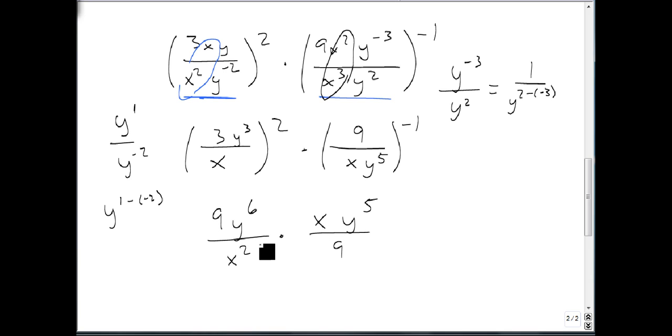We now look across. We have a nine on top and a nine on bottom, so those divide out. We have an x on top and an x squared on bottom, leaving just an x. And y to the sixth times y to the fifth is y to the eleventh. So our answer is y to the eleventh over x.